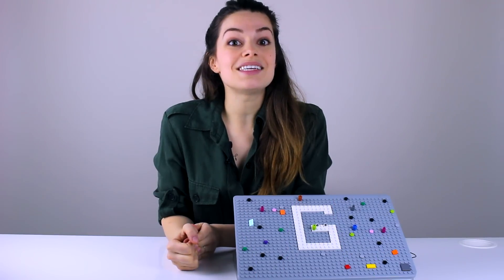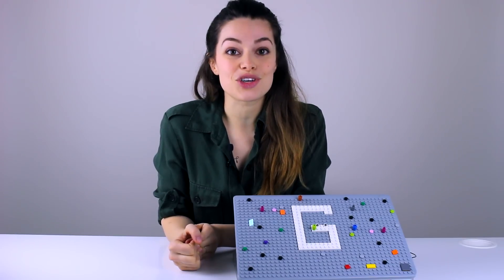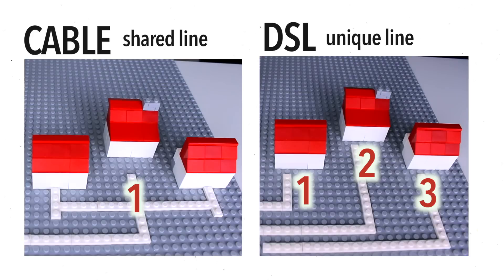While both cable and DSL use electric wavelengths to deliver internet service to your home, with cable, like TV, you share bandwidth with your neighbors. So in peak times, internet speed might reduce. But with DSL, like with phones, each home has its own line, just like how each home has its own unique telephone number, so it's not impacted by your neighbor's usage.